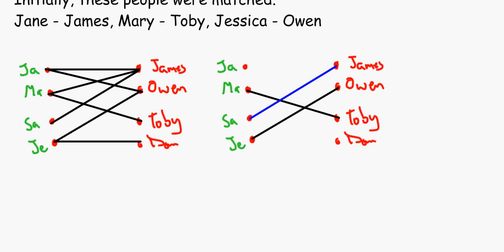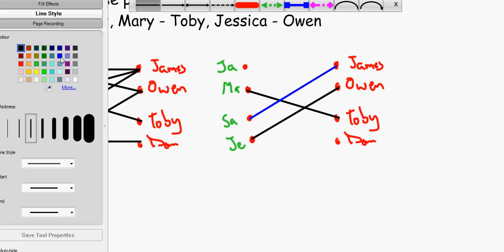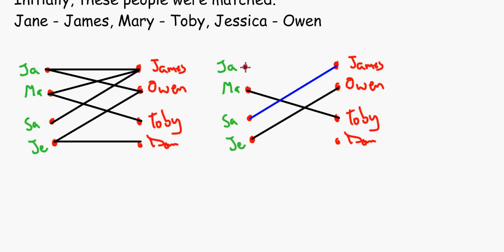So now we go on to Jane, and then we can see that Jane can be matched up with Owen. So we match with Owen, but there's two edges now, so we need to get rid of this one. So we get rid of that line.